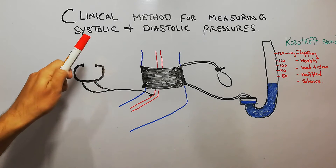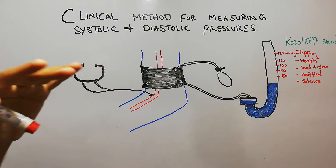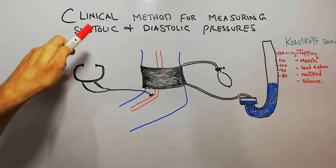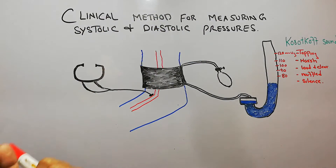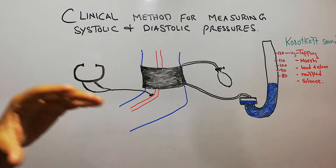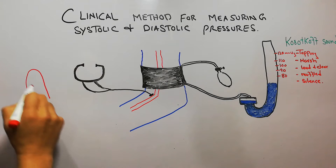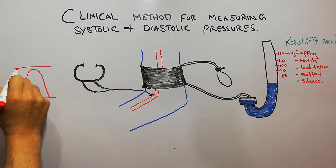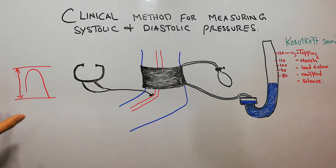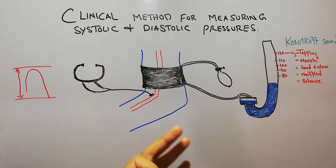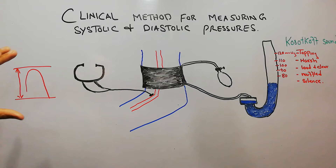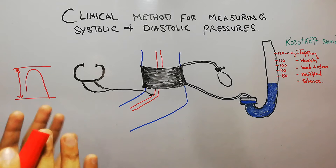Today in this lecture we are going to discuss the measurement of blood pressure, or the clinical method of measuring the systolic and diastolic pressures. Blood pressure consists of systolic pressure and diastolic pressure, and the difference between the systolic and the diastolic readings is known as pulse pressure. We also discussed the transmission of pulse pressure and the different factors affecting it, as well as the damping of the pulse pressure.